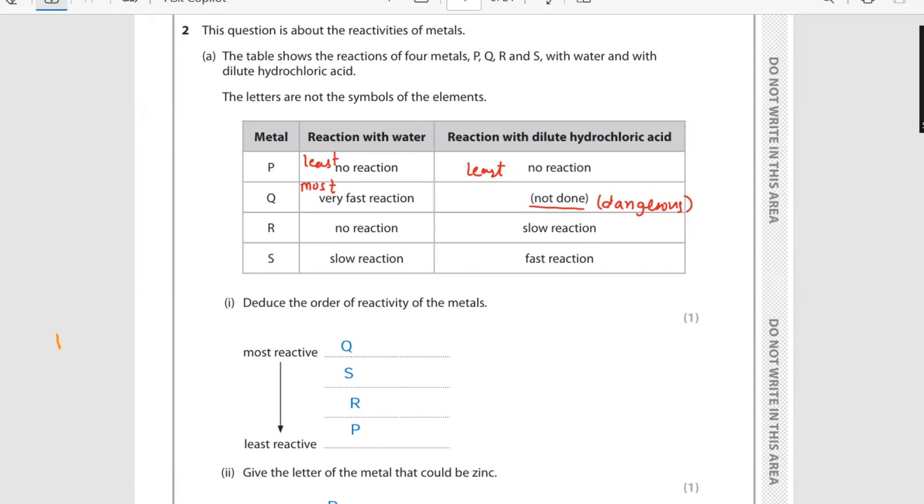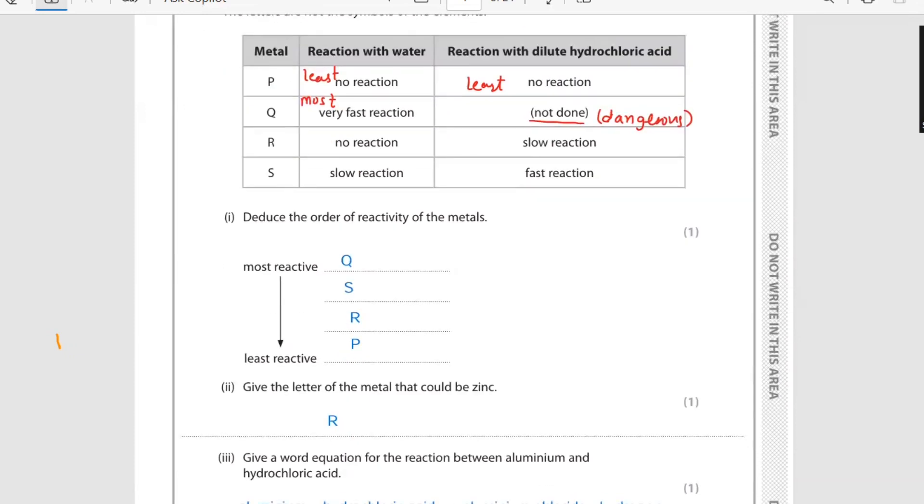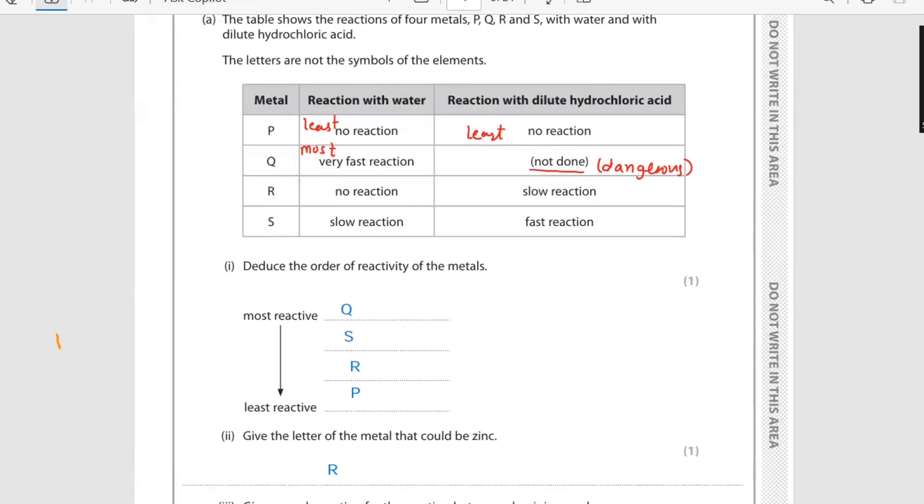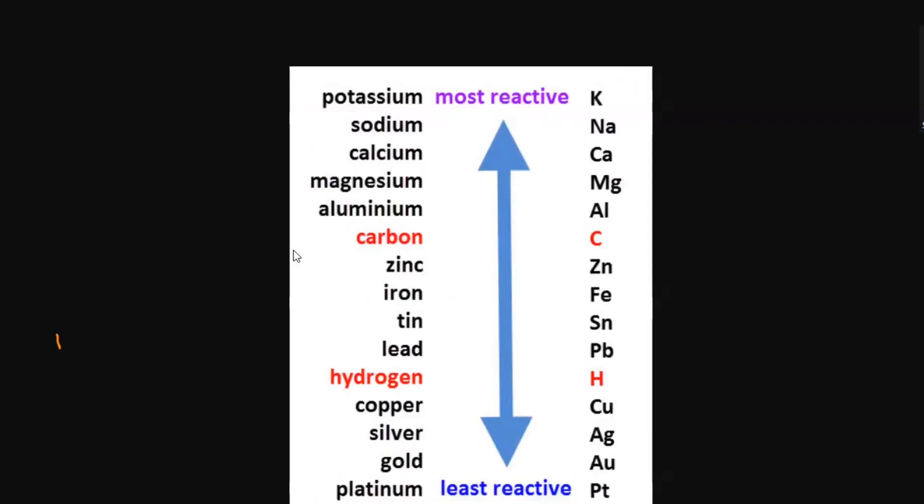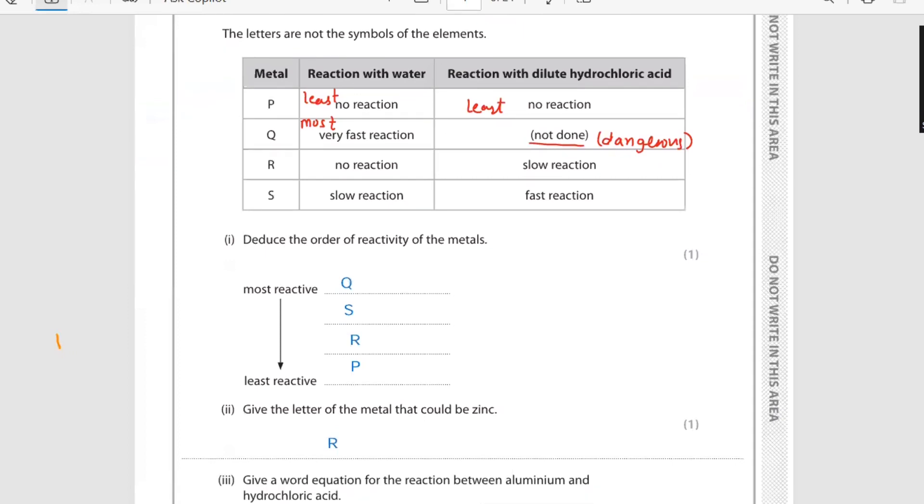R gives no reaction with water and slow reaction with HCl. S gives slow reaction with water and fast reaction with HCl. That's why we have got a complete idea of the order of reactivity series. S is more reactive than R, so we have done it in this order. Give the letter of metal that would be zinc. In this reactivity series you can see zinc is less reactive than sodium, calcium, magnesium, and aluminium, so zinc could be R which is giving no reaction with water and slow reaction with HCl.